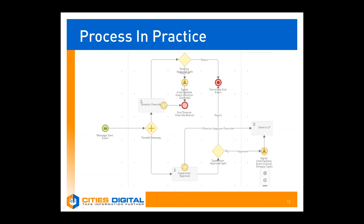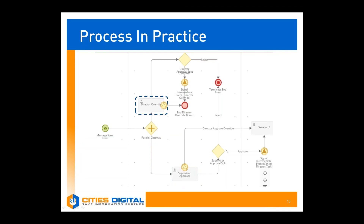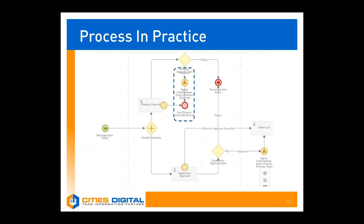Now let's see how this all fits together with a process model that utilizes all of these new activities. First, somebody submits the form. Then it routes to the immediate supervisor for approval, but it also routes to the director following the path of that parallel gateway. Should the director choose to override the supervisor, it could route one of two ways: if the director rejects, the process proceeds down the reject branch to the terminate end event, ending the entire process including the supervisor approval task. If the director approves, the form routes down the approval branch, broadcasts a signal, and ends that branch.